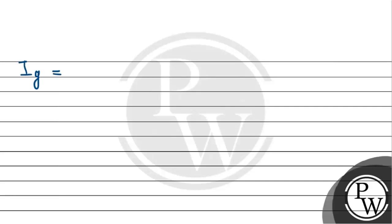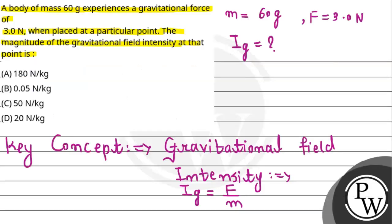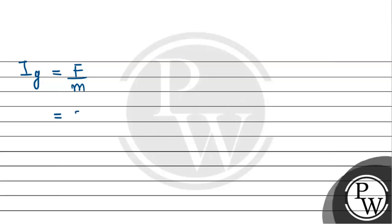So we would say that gravitational field intensity IG can be given by the formula F divided by m. So now this equals gravitational force, which is given as 3.0 N, divided by...